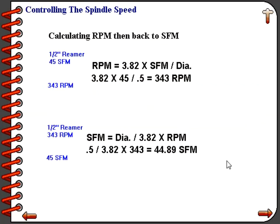Let's do one more exercise. First we will calculate the RPM for a half-inch reamer. For this example we'll say that this half-inch reamer needs to be cutting at 45 SFM. Using the formula RPM = 3.82 × SFM ÷ diameter, we put our real numbers in: 3.82 × 45 ÷ 0.5, and that gives us 343 RPM.